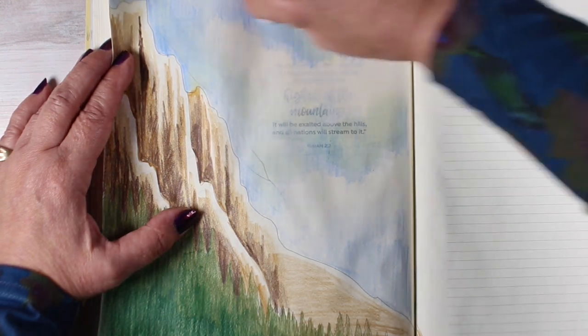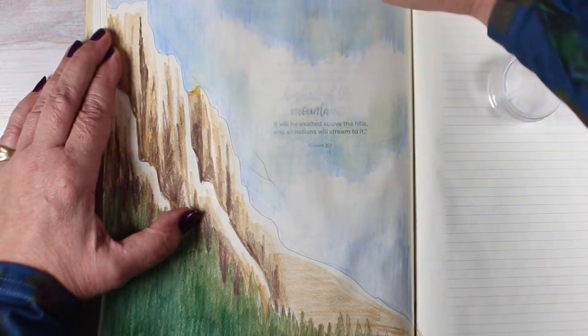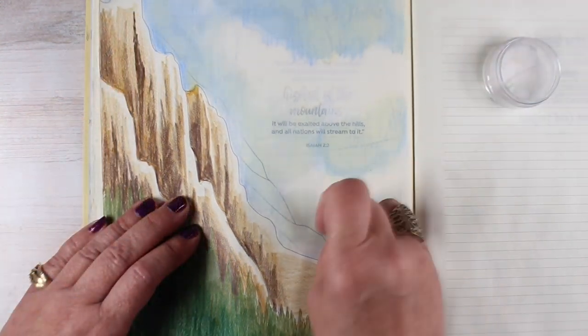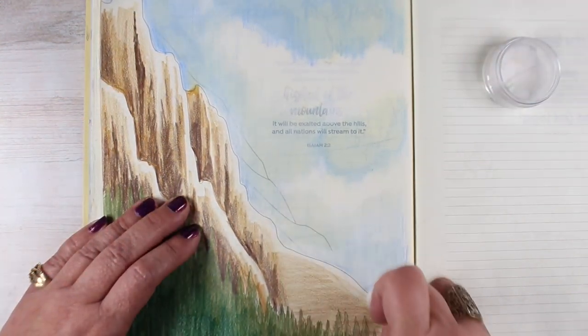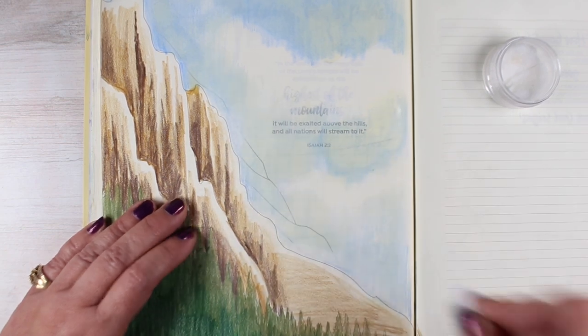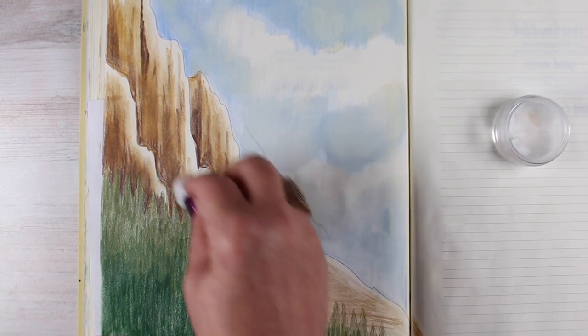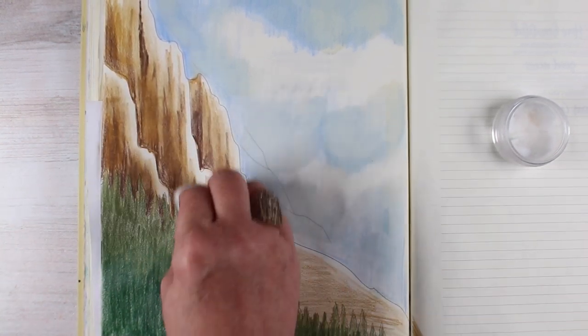You can also use Gamsol. However, I did discover some issues on Bible paper, which is that it stains. It gets like a grease mark because it's greasy. The same thing happened when I tried and switched to Gamsol and that did it as well.